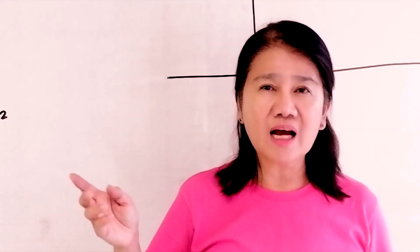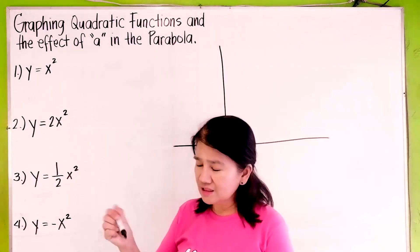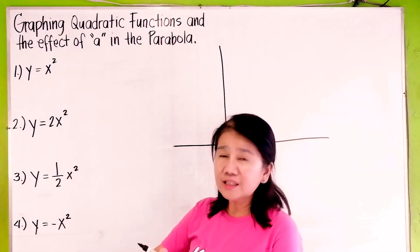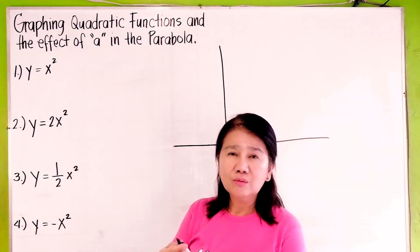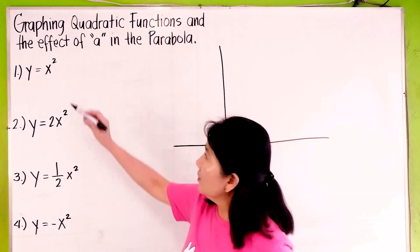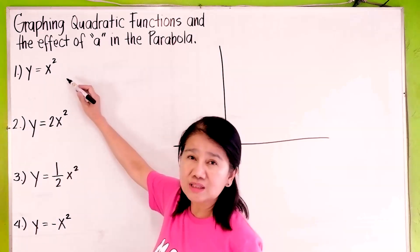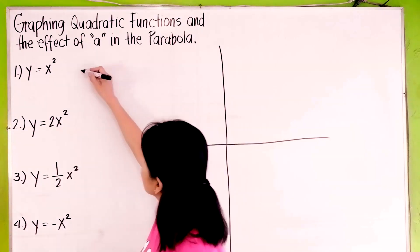The parabola, as you have learned, is the graph of a quadratic function. Let's start with the first example: y equals x squared.